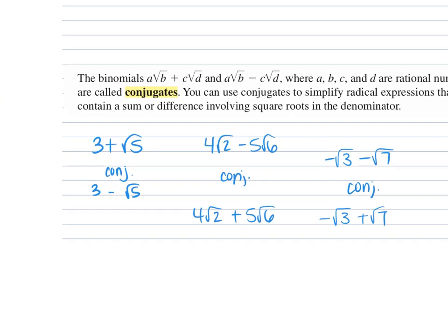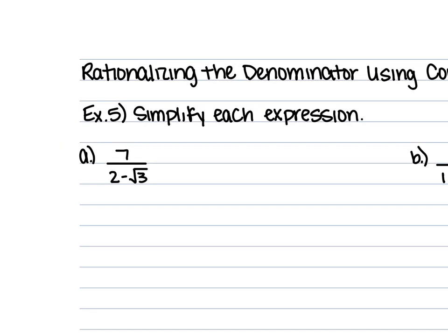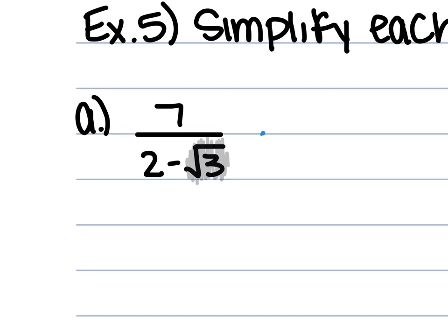One more example: the conjugate of negative square root of 3 minus the square root of 7 would be negative square root of 3 plus the square root of 7. Josh didn't change the value of the first term — he only changed the symbol between the two terms. So you only change the sign in the middle. Any questions on what a conjugate is? The conjugate helps us when we need to rationalize the denominator. Look at letter A: 7 over 2 minus the square root of 3. What's illegal about leaving this as our answer? We have a radical in the denominator.